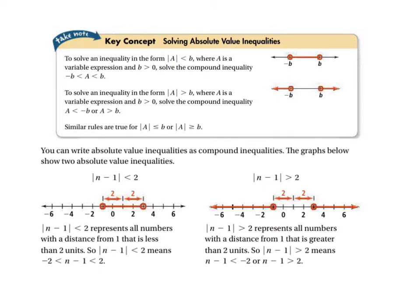Alright, solving absolute value inequalities. Again, as we mentioned in your vocab here, we're going to have an and and an or situation. Loads of fun here. To solve an inequality in this form, again, we're less than, where a is a variable expression and b is greater than 0. Right, because that whole, you know, less than 0 thing doesn't work out. Solve the compound inequality. So again, whatever b is, put its opposite, put what it is, and then your expression in the middle, and solve all three sides.